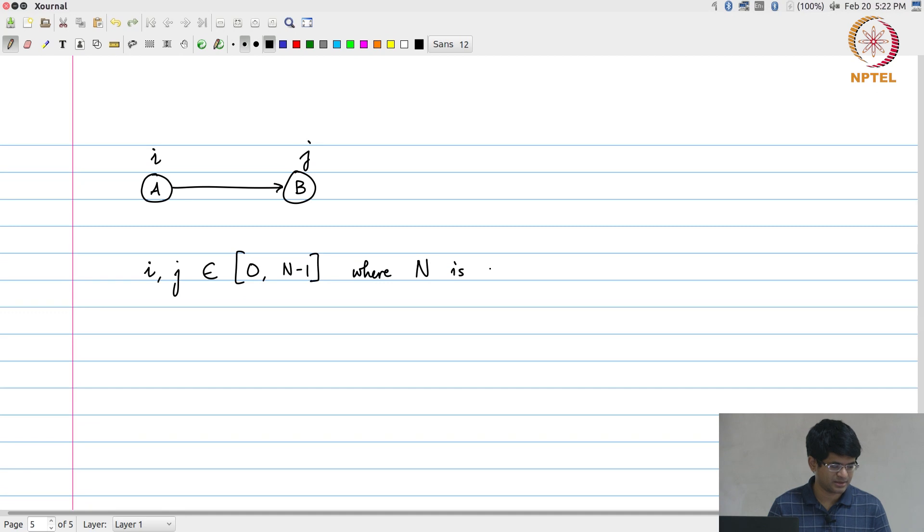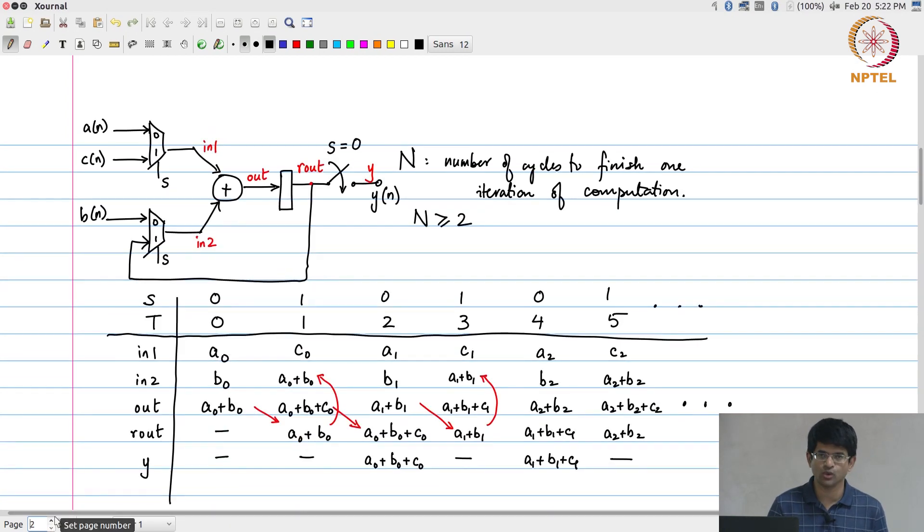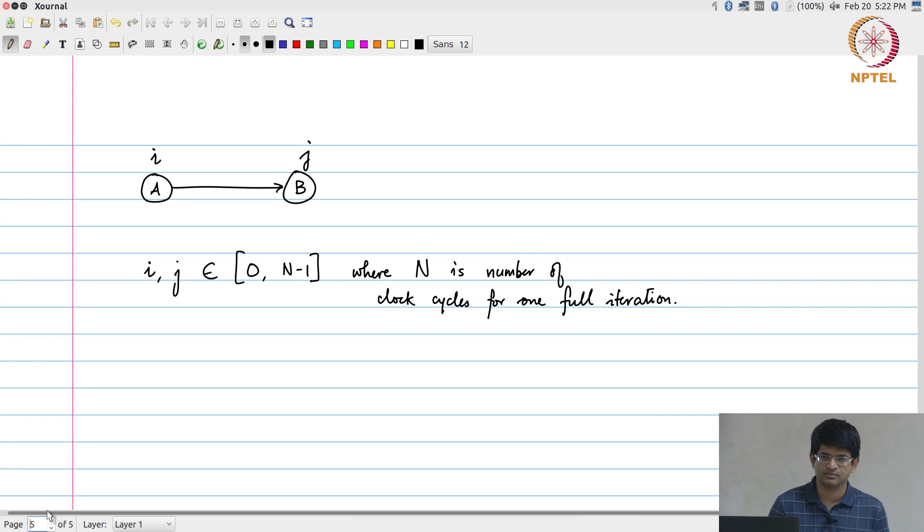i and j must be in the range 0 to n minus 1, where n is the number of clock cycles for one full iteration. In the previous examples n is equal to 3, in the original one n is equal to 2 - the number of cycles that I take to finish one iteration. Assume that somehow I have chosen n.